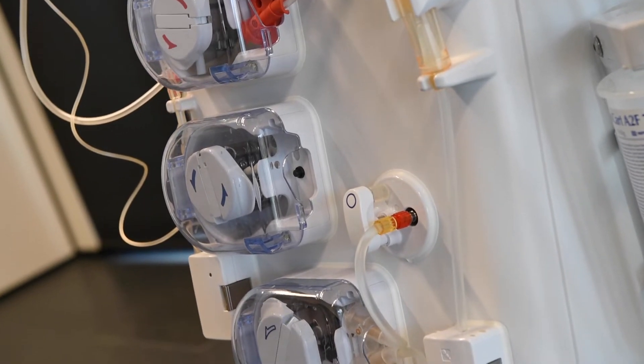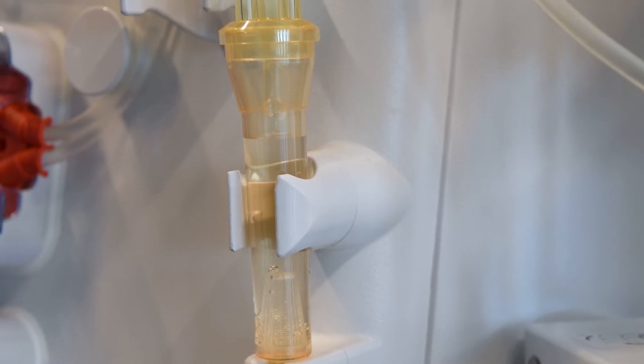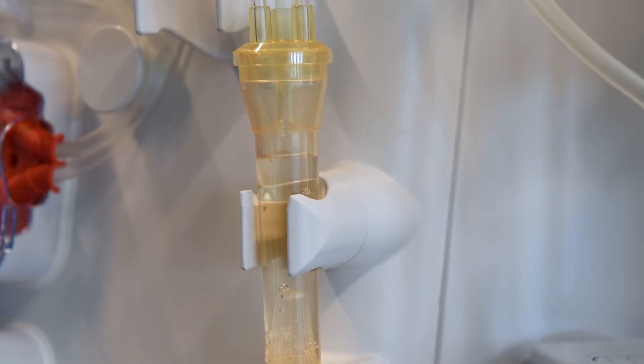The bloodline will automatically be filled. At the end of the priming process, the machine will set the venous chamber level using the last 50 ml of the priming volume.